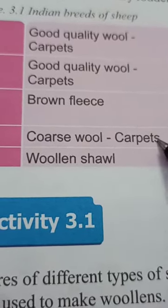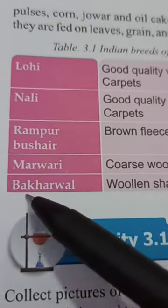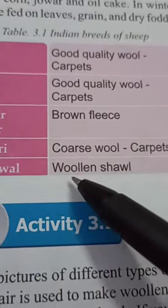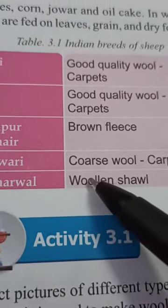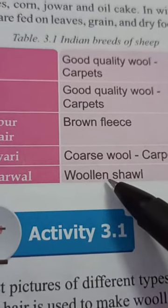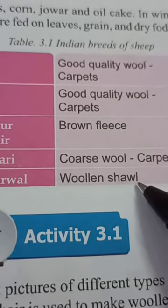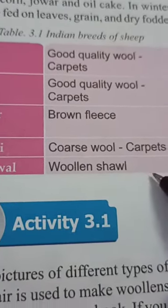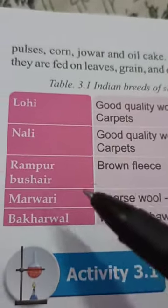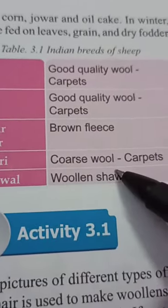The Bhakharwal breed gives us better quality wool, which is used to make woolen shawls, woolen sweaters and other woolen materials. These are all the Indian breeds of sheep and the products that can be prepared from their wool.